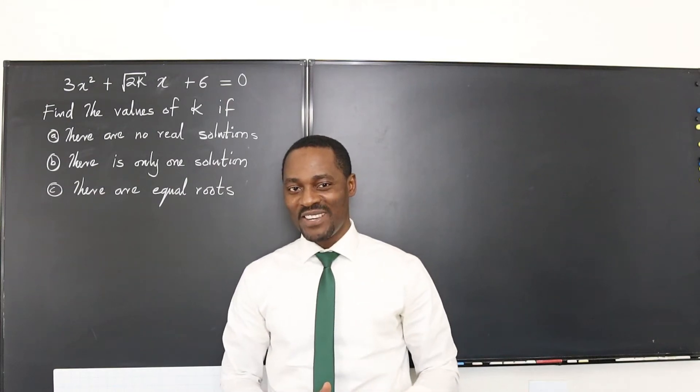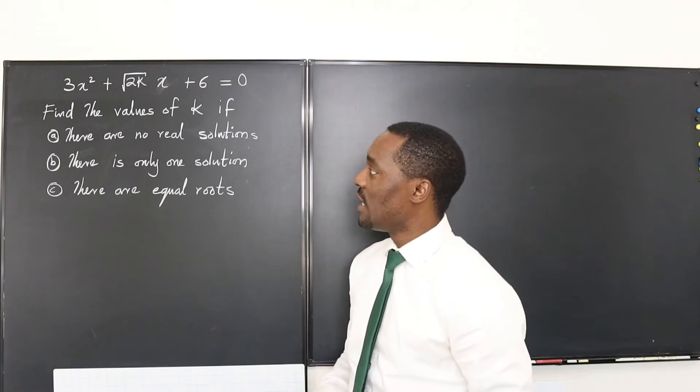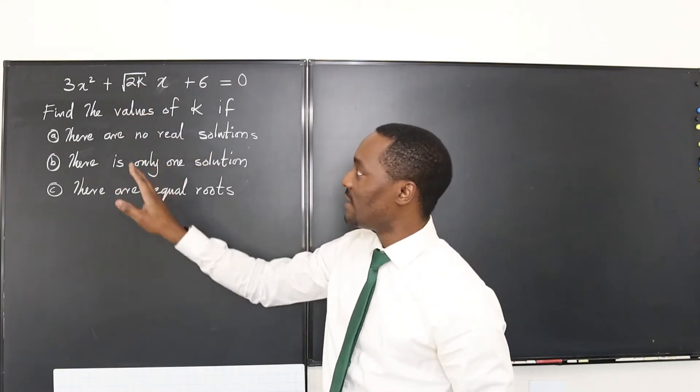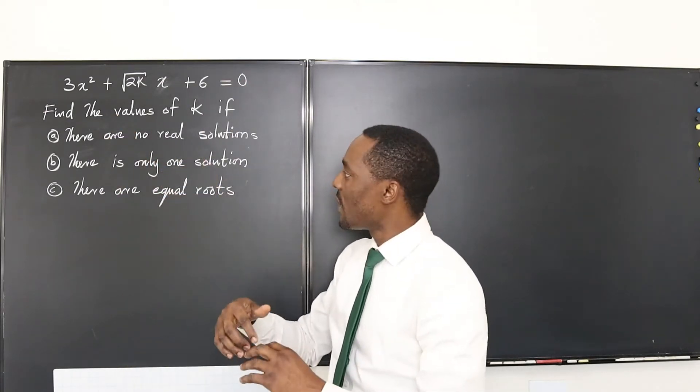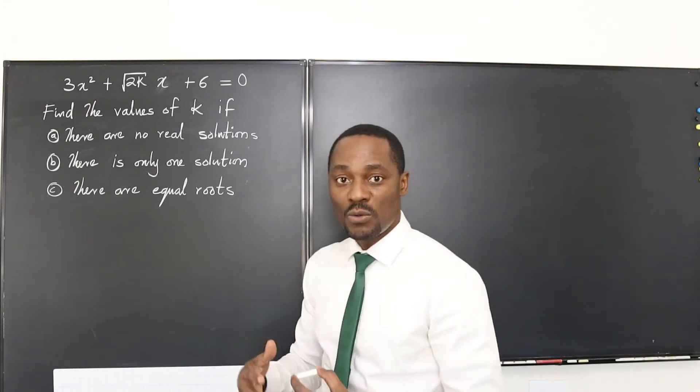Hello and welcome to another video. So this is a quadratic equation problem and you're supposed to figure out what the values of k will be so that this quadratic equation will have no real solutions or will have exactly one solution or will have equal roots.